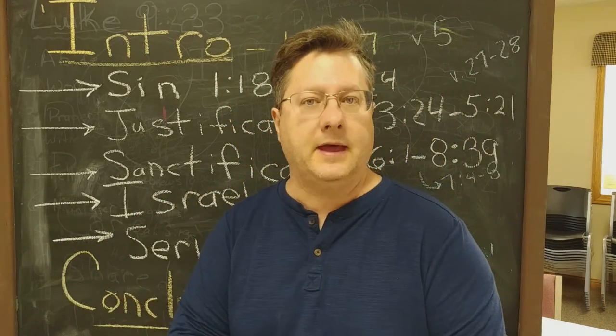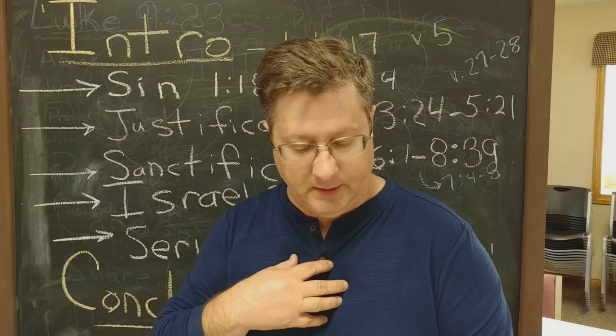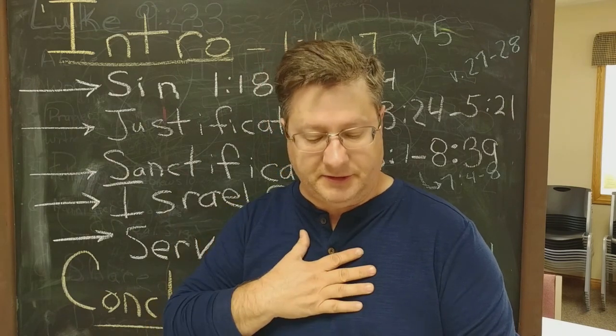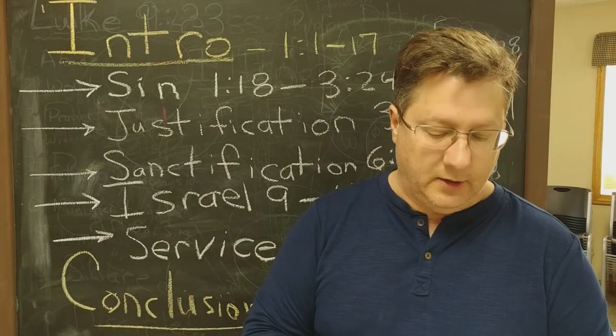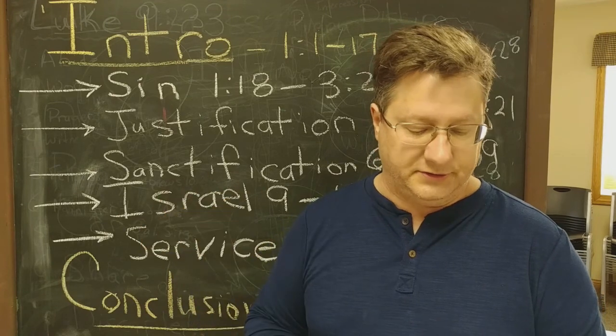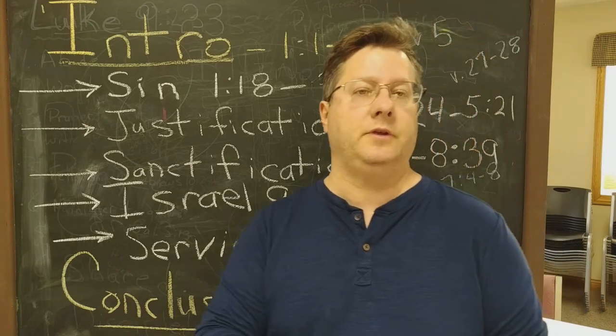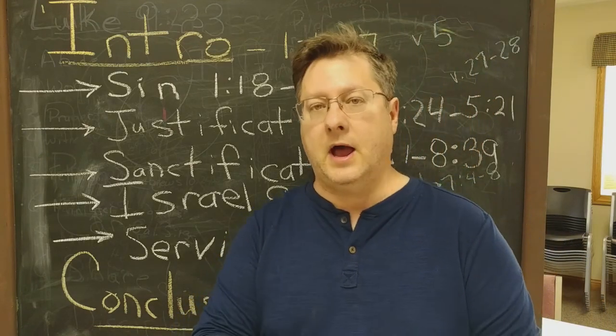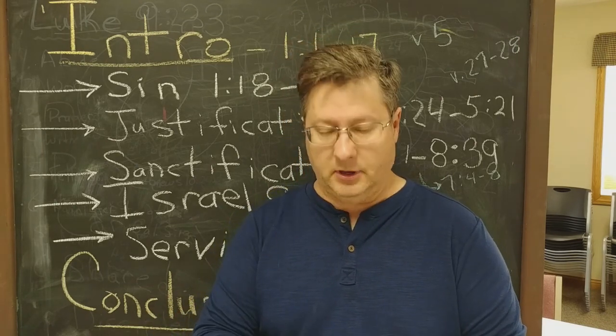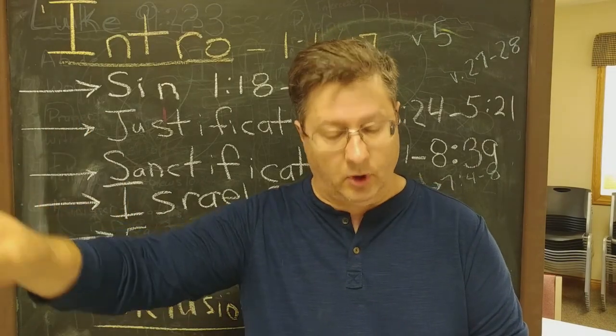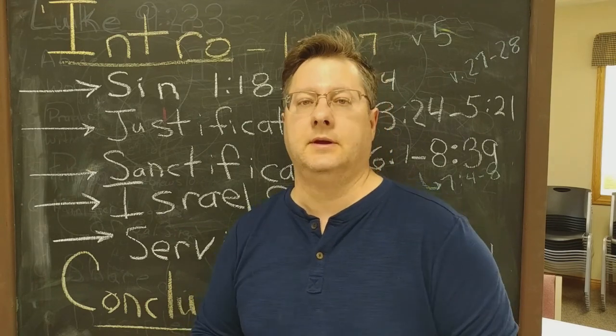In verse 5 he talks about his own ministry. He says through whom, or through Jesus, we have received grace and apostleship to bring about the obedience of faith for the sake of his name among all the nations including you who are called to belong to Jesus Christ. Notice here the desired outcome of what Paul is saying. The desired outcome of his ministry and the desired outcome that he has for those who are in Rome is to bring about the obedience of faith.